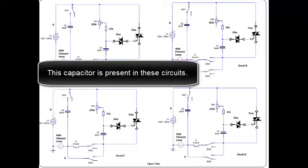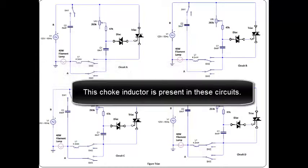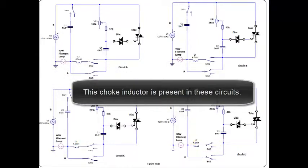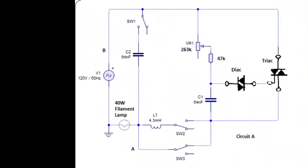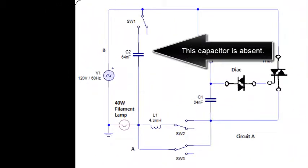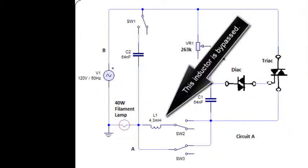This capacitor is present in these circuits. This choke inductor is present in these circuits. In the first demonstration, this capacitor is absent and this inductor is bypassed.